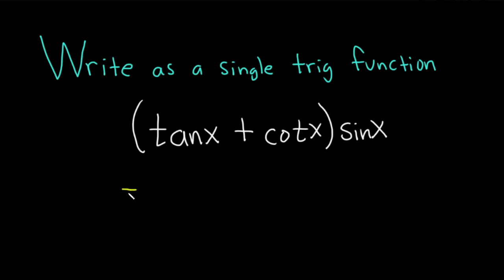We'll start by writing the tangent and cotangent in terms of sine and cosine, because that will probably help us when we multiply. So tangent is sine over cosine. This is sine x over cosine x,